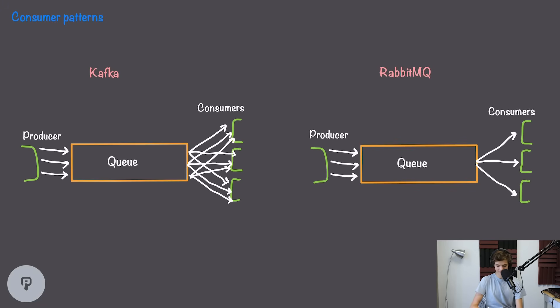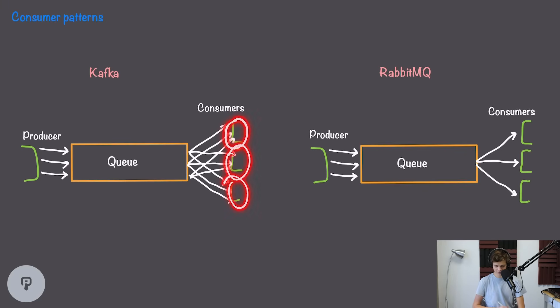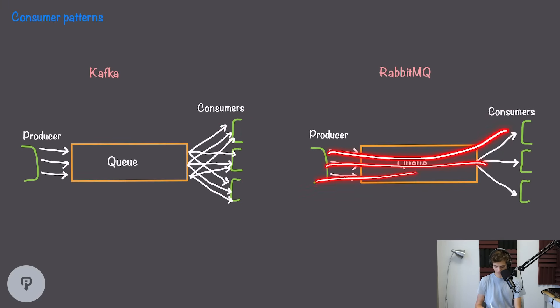So if we have, for example, three consumers connected to one queue, and we send three messages into that queue, each consumer will receive all three messages with Kafka. With RabbitMQ, on the other hand, each consumer will receive one of the three messages. Kafka and RabbitMQ both support doing this the other way around as well, but it requires a little more setup and isn't quite as scalable.